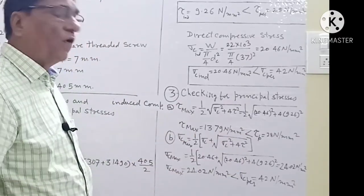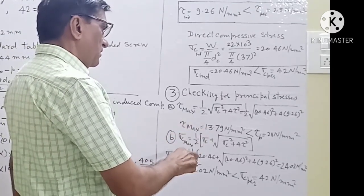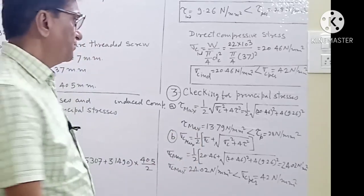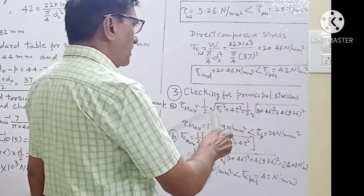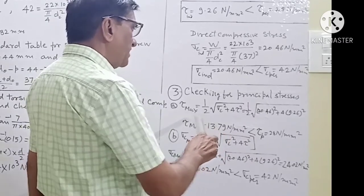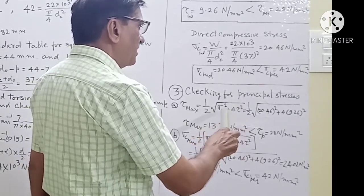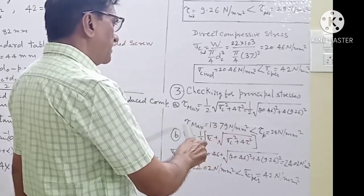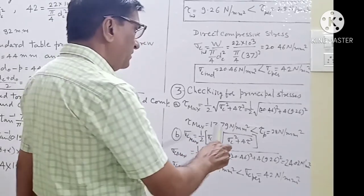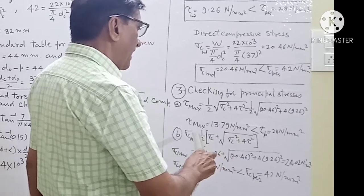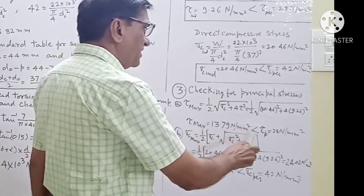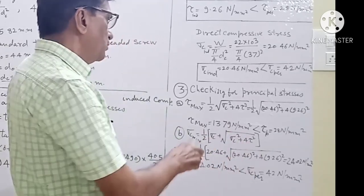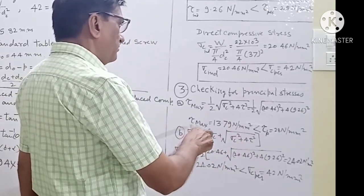Now we check the screw for principal compressive stresses and maximum shear stresses. The maximum shear stress is given by τ_max equal to (1/2)·√(σC² + 4τ²). The maximum shear stress comes out to be 13.79 N/mm², which is less than the permissible shear stress of 28 N/mm². Hence, the screw is safe for maximum shear stress.